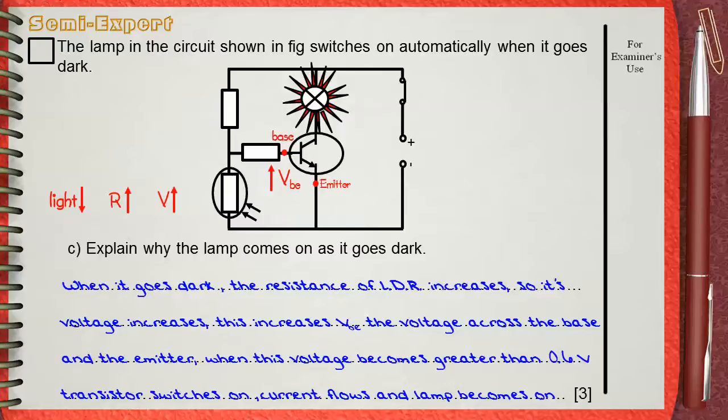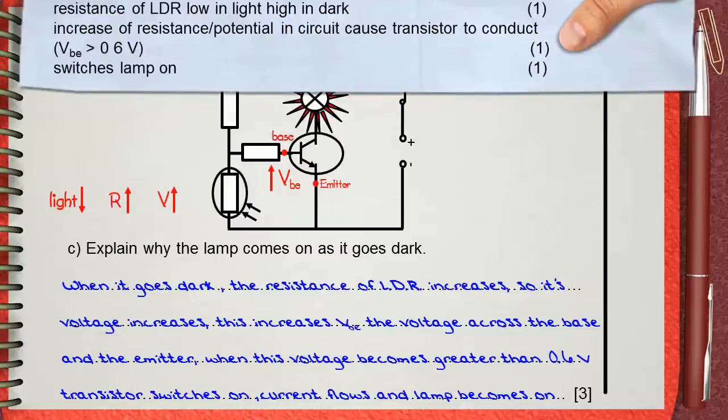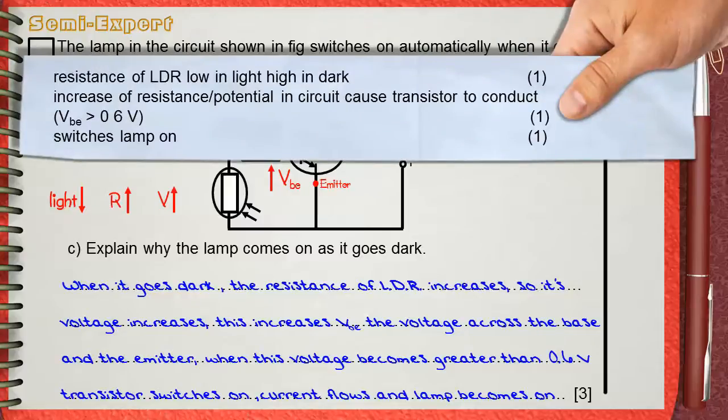A three mark question. Let's see what the mark scheme will say about the three marks. The first mark is for resistance of LDR low in light, high in dark. This is what we said here, when it goes dark the resistance of LDR increases.